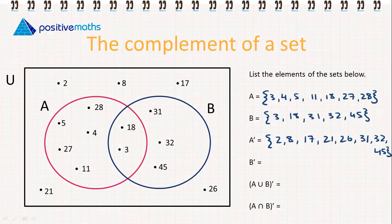Now we have B complement. So it's going to include 2, 8, 17, 21, 26, 4, 5, 11, 27, and 28.